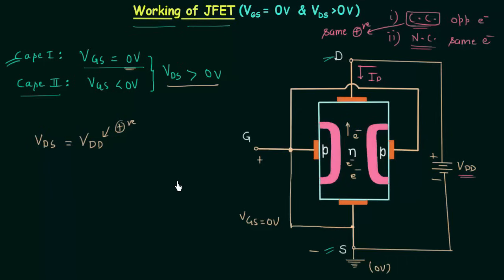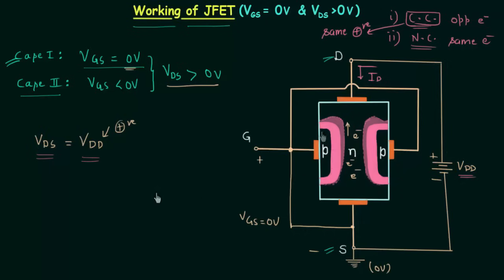Now we will talk about the depletion layer — what will happen to it when we connect VDD in the circuit. As soon as VDS or VDD is applied, the width of the depletion layer will change. The width will remain almost the same at the bottom but will increase at the top. The N channel provides resistance to the current flow and we can consider the N channel as four resistances.